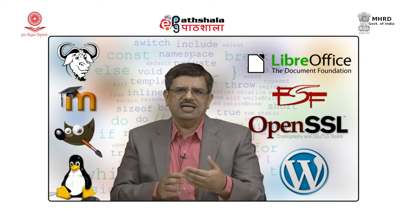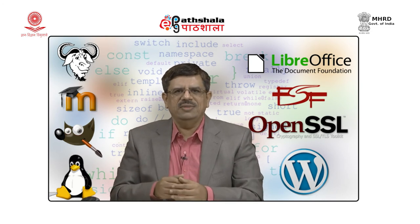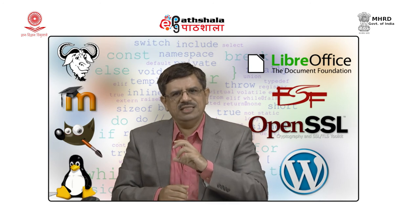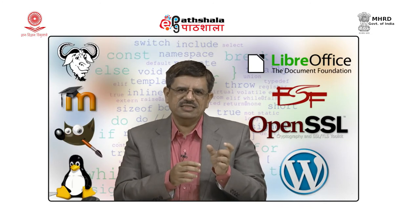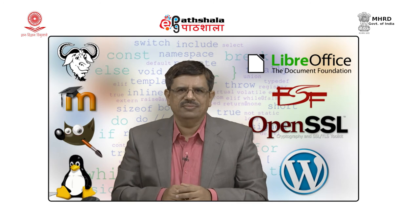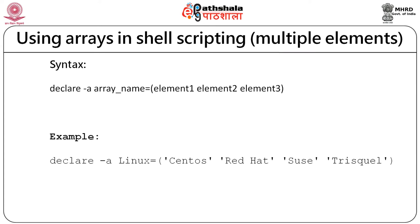You can assign array elements individually, for example: linux[0]=CentOS, linux[1]=RedHat, linux[2]=Ubuntu, linux[3]=SUSE, linux[4]=Trisquel. Alternatively, to declare an entire array in a single statement, use: 'declare -a arrayname=(element1 element2 element3)'. Note that elements are separated by whitespace, not commas. For example: 'declare -a linux=(CentOS RedHat Ubuntu SUSE)' creates an array of four elements in one line.